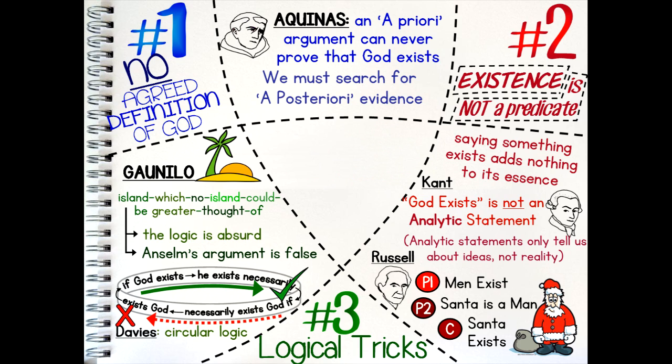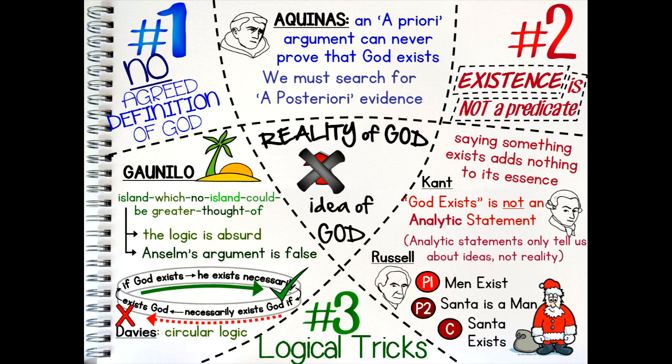Ultimately, what all of these criticisms share is that they believe it is impossible or illegitimate to move from the idea of God to the reality of God. In fact, the name 'ontological argument' was a name made popular by Immanuel Kant, who was a great critic of the argument. The Greek word 'ontos' means reality, and Kant used this name because he believed the argument made an unacceptable logical leap from ideas to reality.